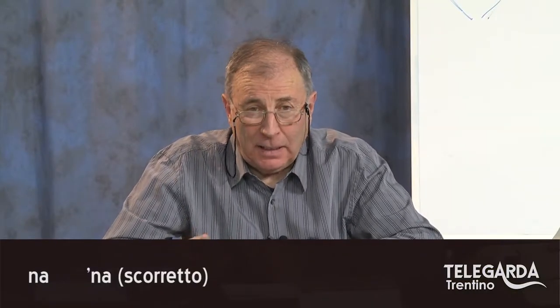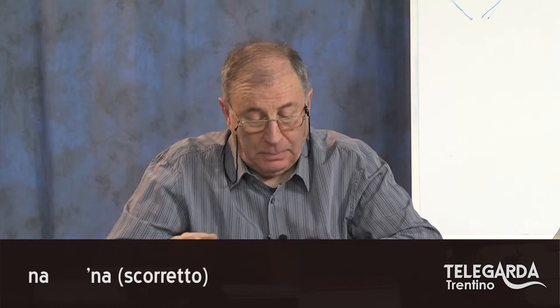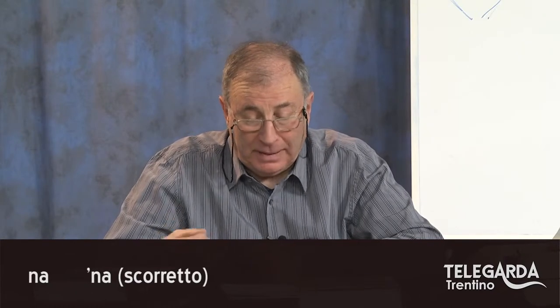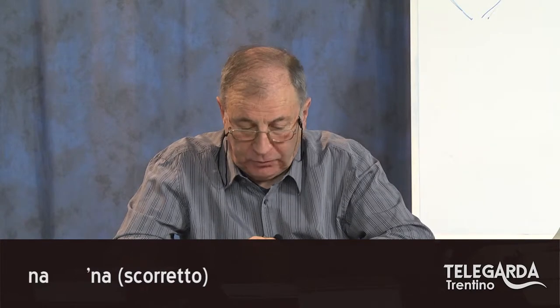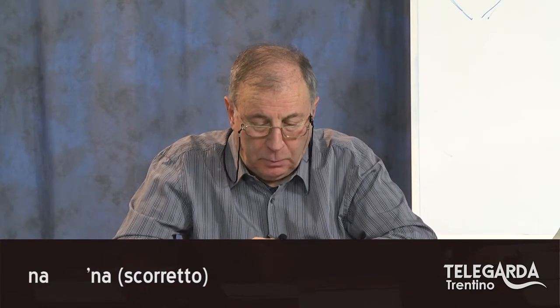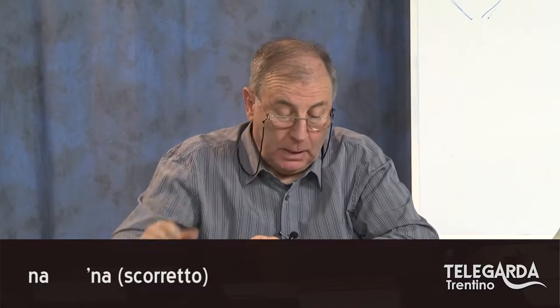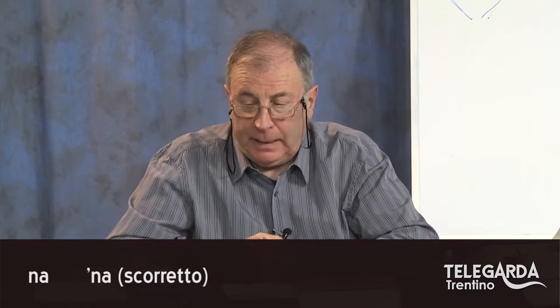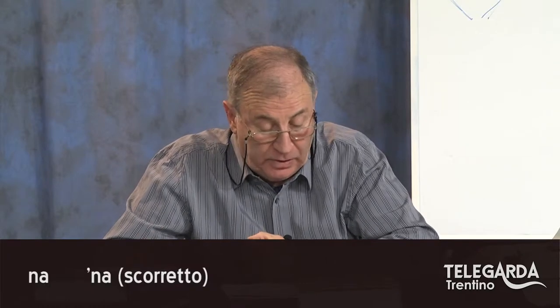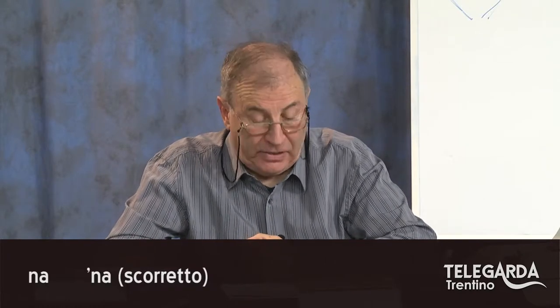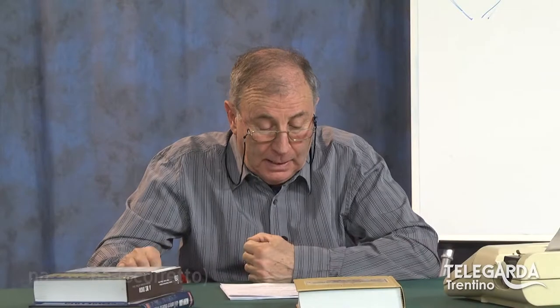Poi un altro aspetto: questo 'na', quando vuol dire 'una', articolo indeterminativo. Sappiamo già che Floriani scrive sempre 'na' con l'apostrofo, è caduta la u e quindi Floriani mette l'apostrofo. Ma la maggior parte dei poeti dialettali non mettono l'apostrofo, da quello che ho visto — non ne ho visti tantissimi — però quelli che ho visto insistono più con il 'na' senza apostrofo.